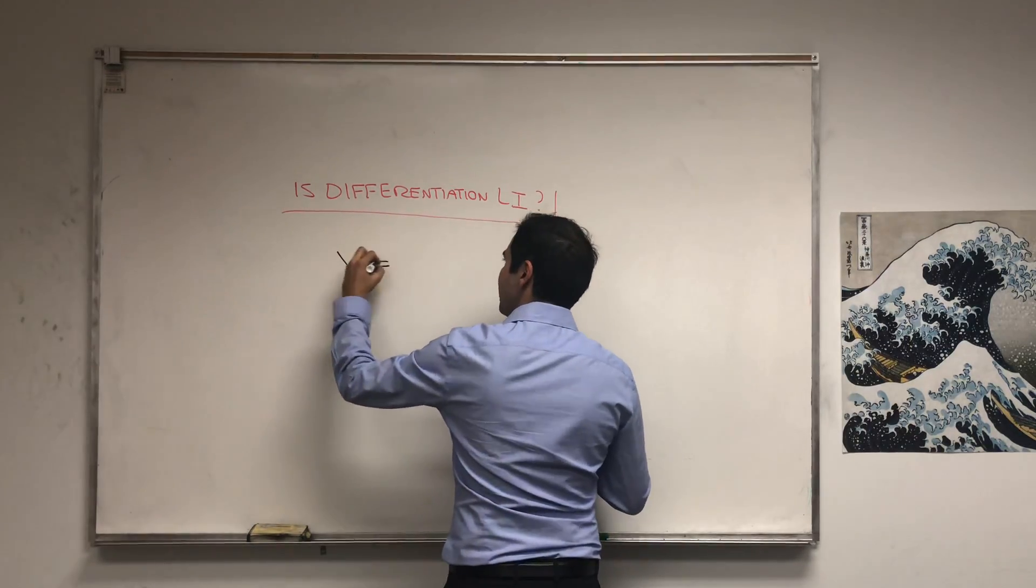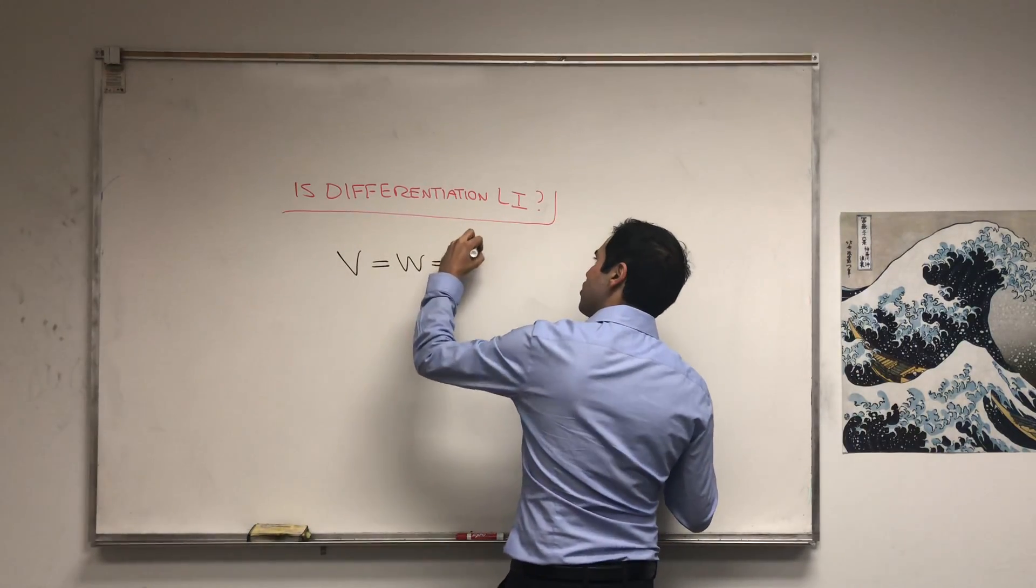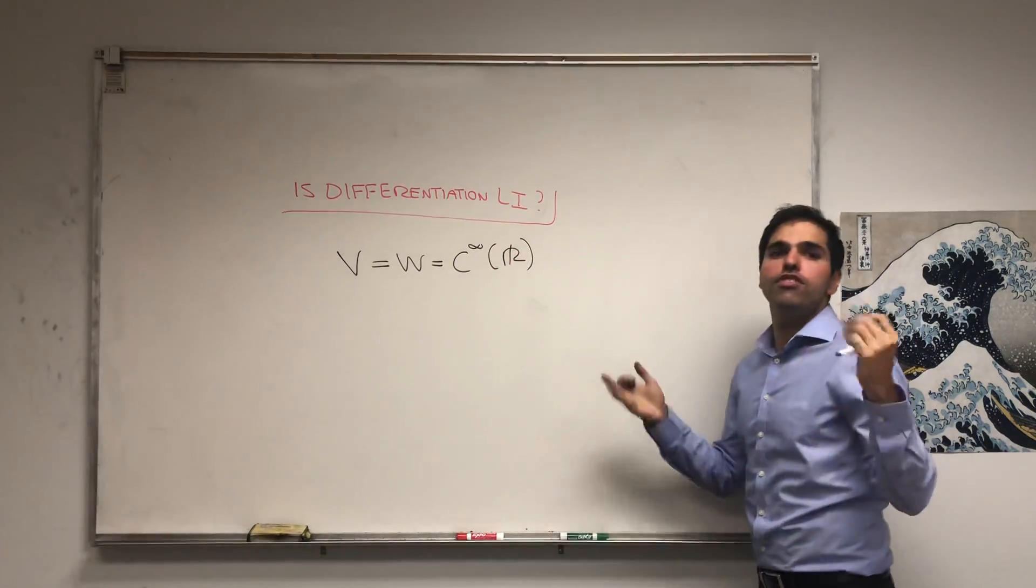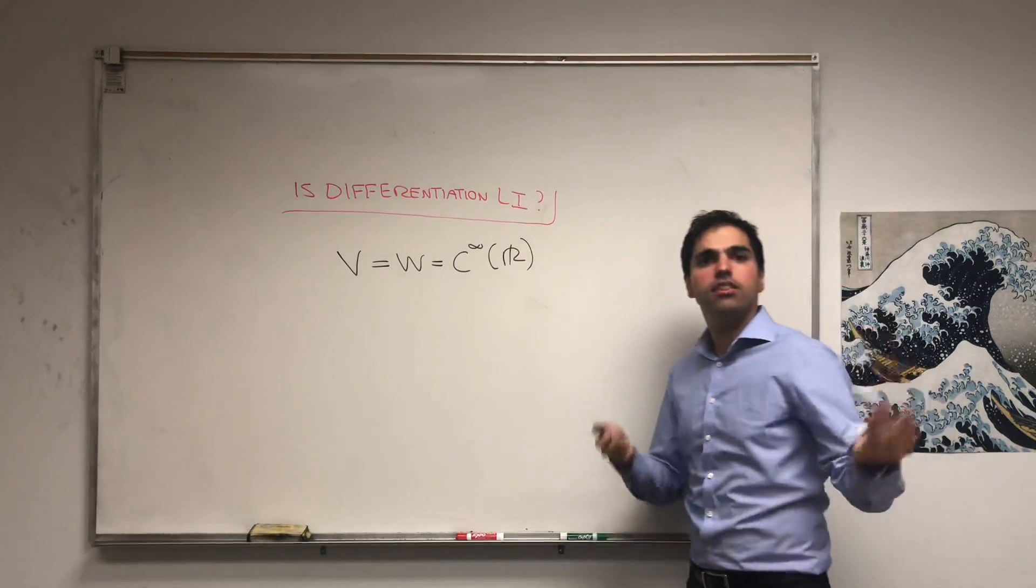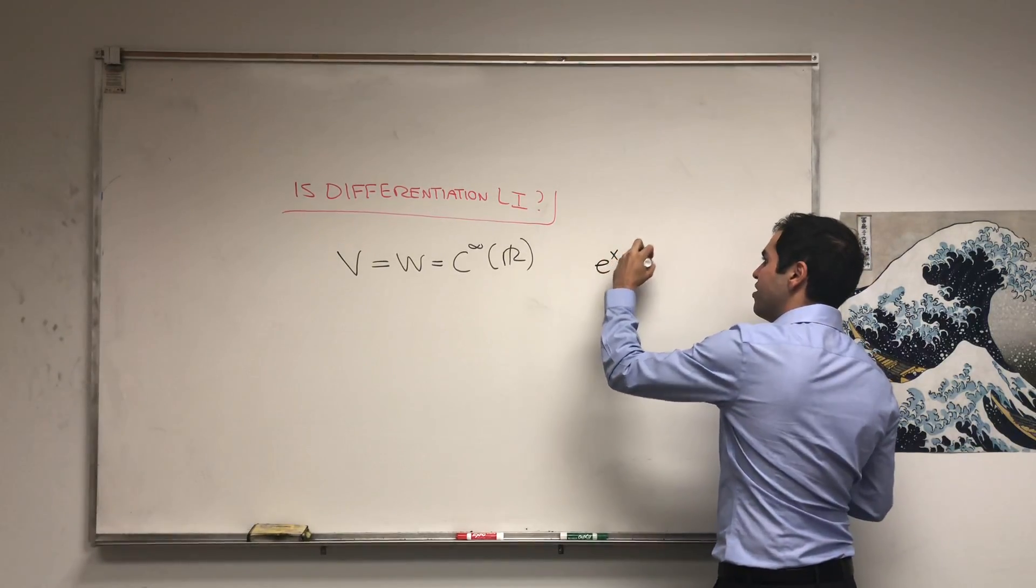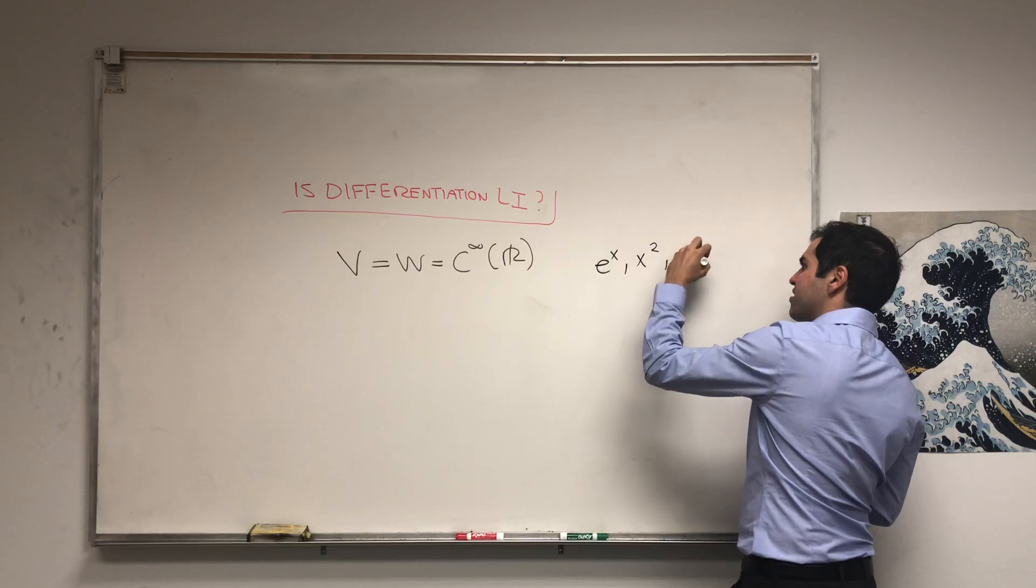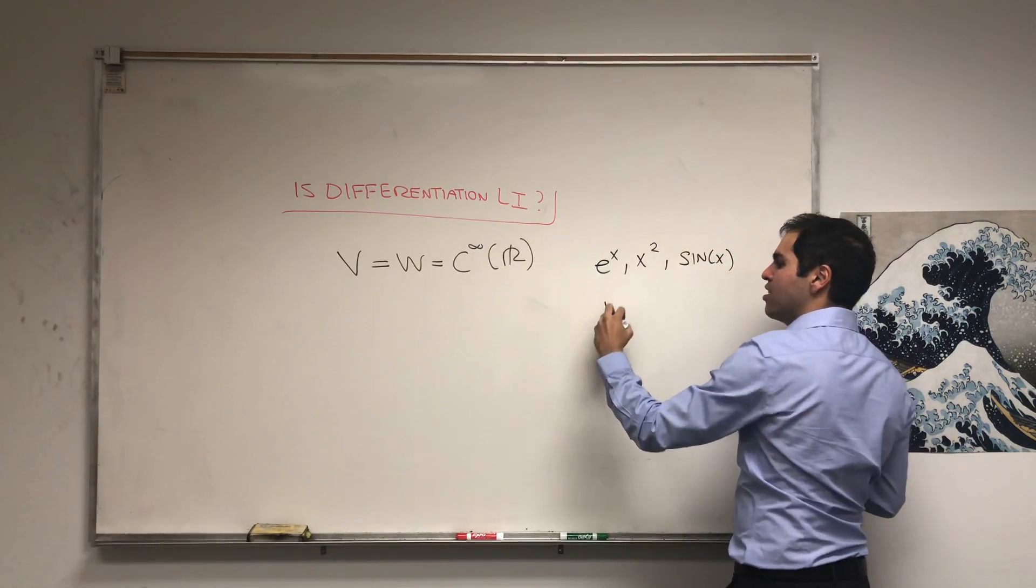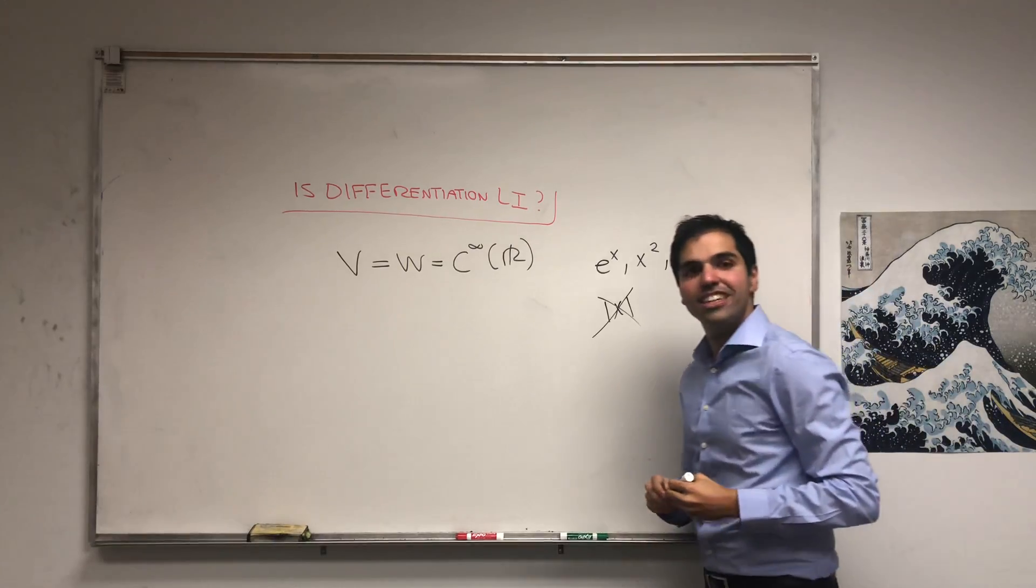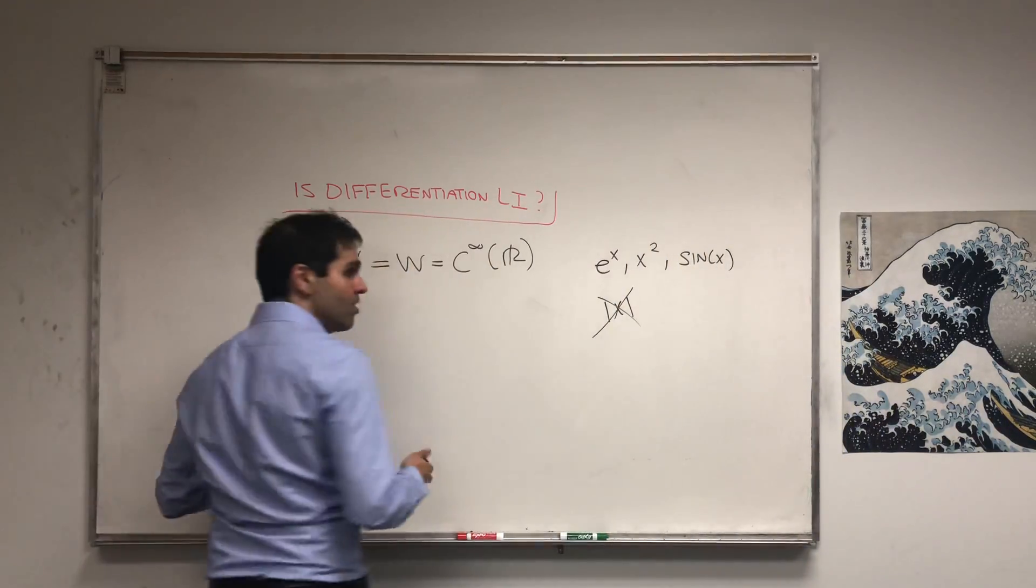But what I do want to show is the following. So let V=W be the space of just smooth functions on R, so the space of infinitely differentiable functions which are basically the functions you're learning in calculus, like e^x or x² or sine of x, but not stuff like absolute value of x because you can't really differentiate that, at least at zero.